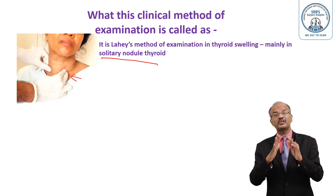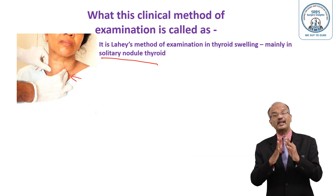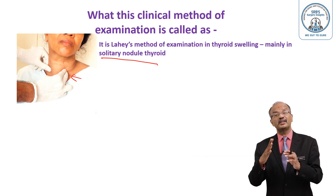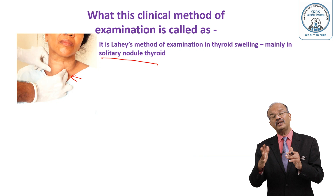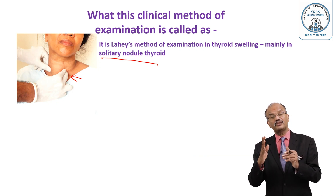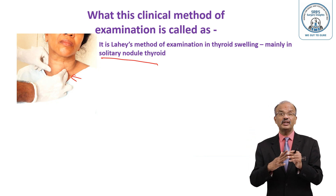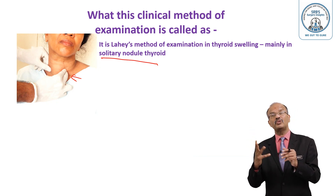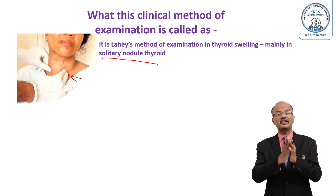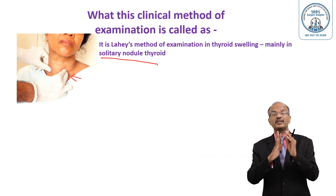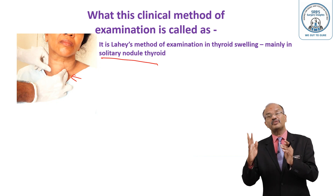To confirm there are no nodules in the posterior part of the gland, you perform Lahey's method of clinical examination. This confirms your clinical diagnosis as solitary nodule of thyroid. By current guidelines, newer definitions exist for solitary nodule confirmation, but with basic clinical method — if Lahey's method shows no nodules felt in the posterior aspect, it becomes a solitary nodule thyroid.